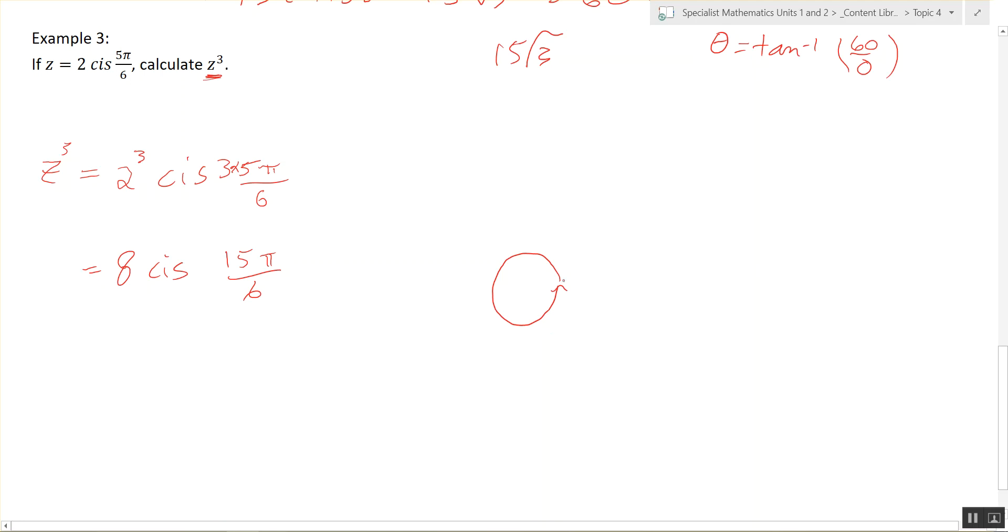All right. What happens every two pi? So, how can we rewrite this? Three minus what from 15? There we go. Three pi. That's what I was looking for.